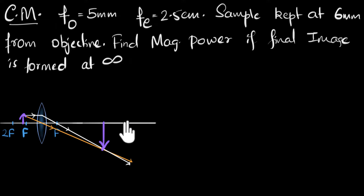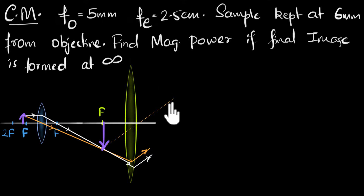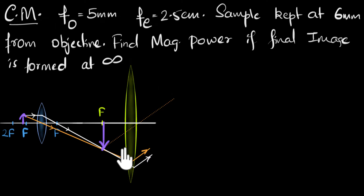We can further magnify this image by using a magnifying glass or another convex lens. This image now acts as an object for the next convex lens. Since we want the final image to be formed at infinity, the rays of light falling on our eyes have to be parallel to each other. That can only happen if the image of the first lens — which is the object for the second lens — is right at the principal focus, because only then are the refracted rays parallel to each other.